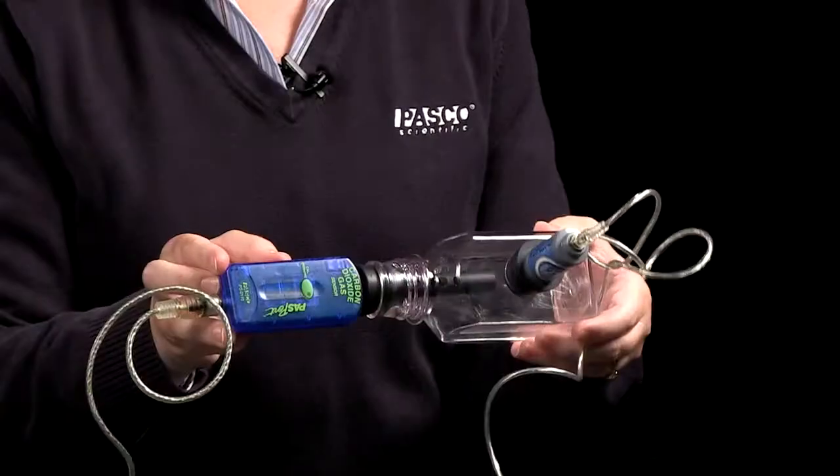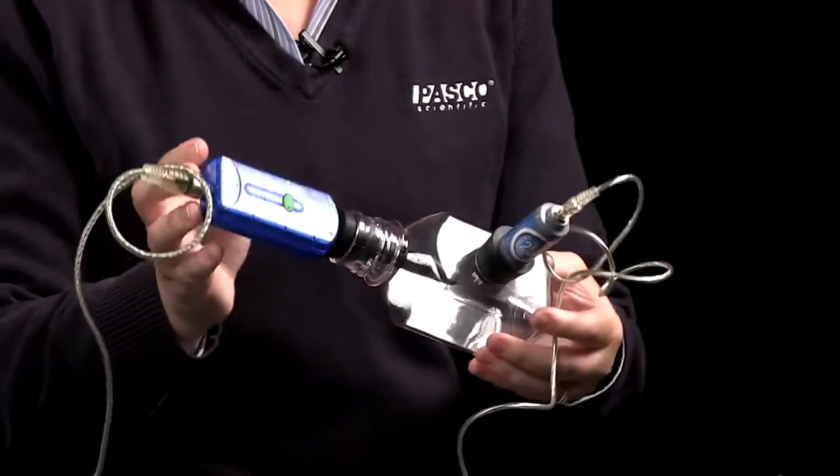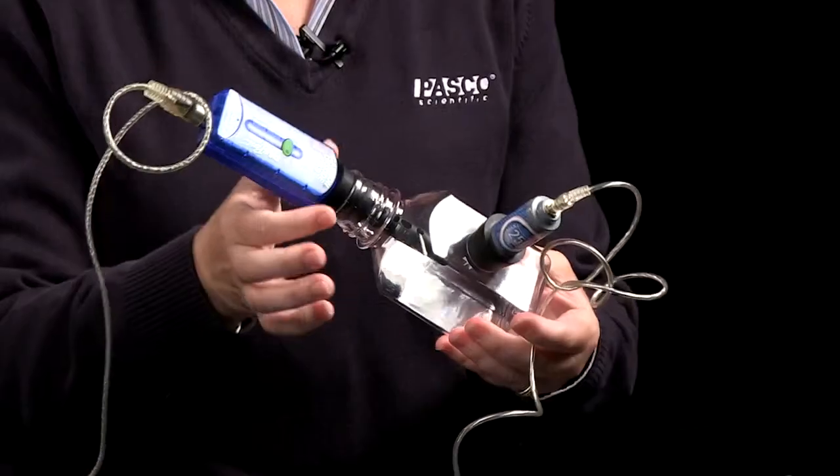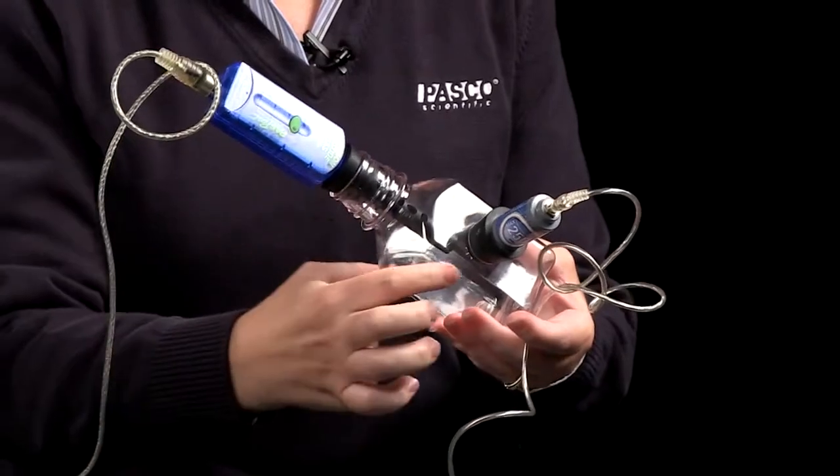I have the carbon dioxide and oxygen gas sensors connected to what we call a metabolism chamber. It's a little different than the sampling bottle that I used for calibration. It has an opening at the top for one sensor and a second opening at the side, so you can use the two gas sensors at the same time.